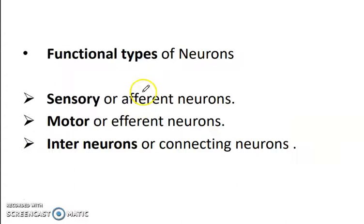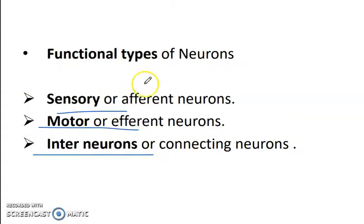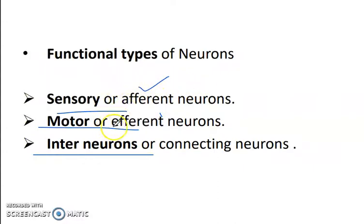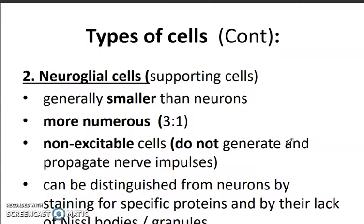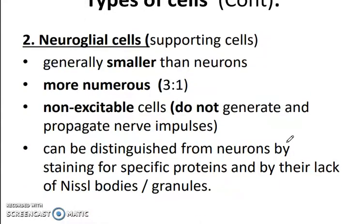There are three types of neurons: sensory, motor, and interneurons. Sensory neurons are the afferent neurons going towards the CNS. Motor neurons are the efferent neurons — 'efferent' meaning exit — going away from the central nervous system. Interneurons are the connecting neurons.